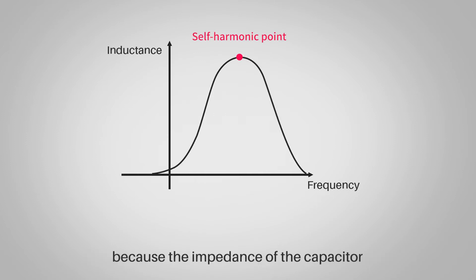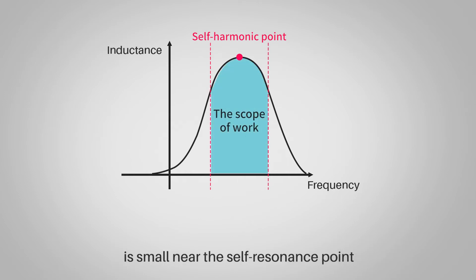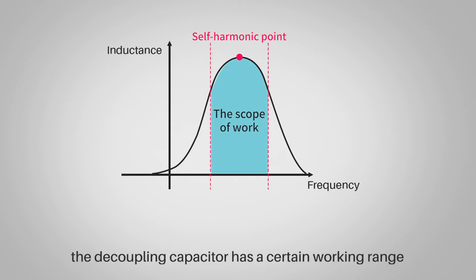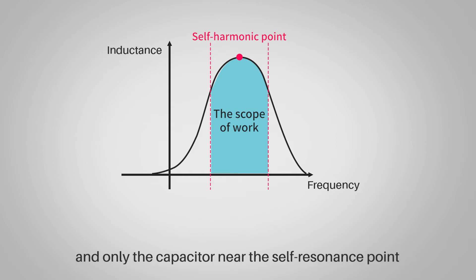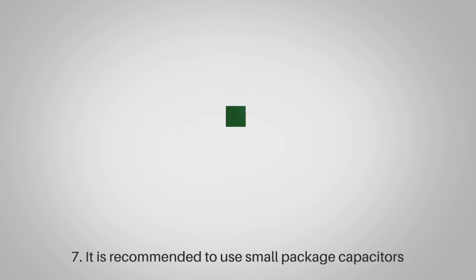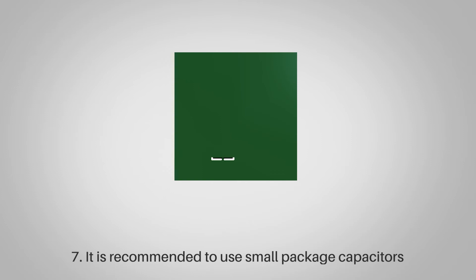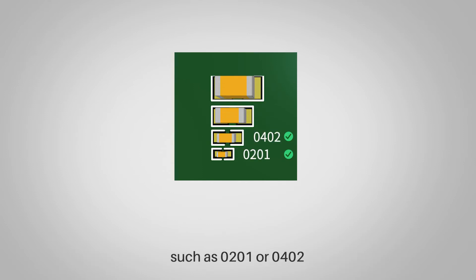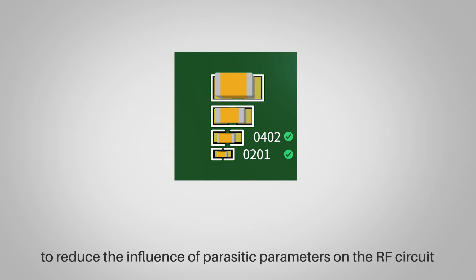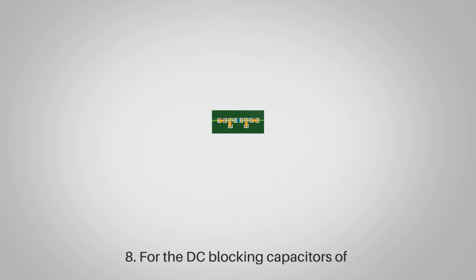Rule six: The decoupling capacitor adopts the capacitor value corresponding to the SRF, because the impedance of the capacitor is small near the self-resonance point. The decoupling capacitor has a certain working range, and only capacitors near the self-resonance point have a better decoupling effect. Rule seven: It is recommended to use small package capacitors such as 0201 or 0402 to reduce the influence of parasitic parameters on the RF circuit.